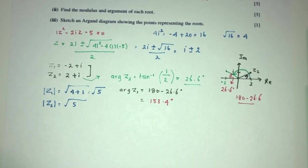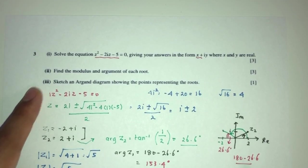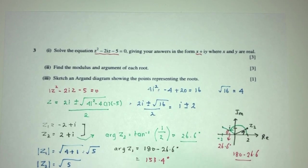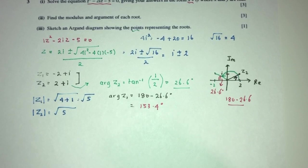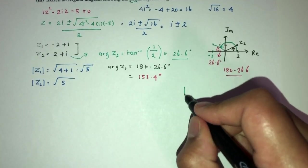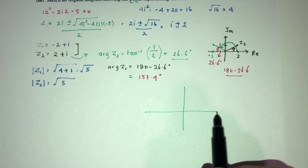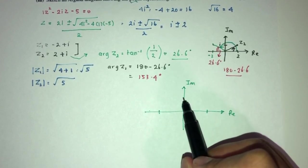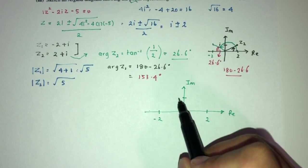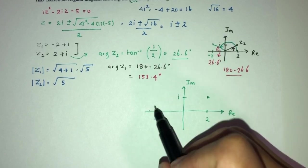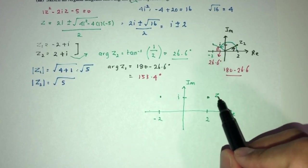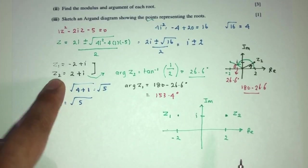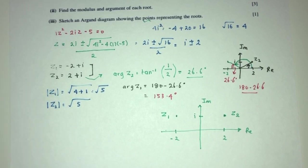For part 3, we sketch the Argand diagram showing the two roots. The real axis and imaginary axis are drawn. z₂ = 2 + i is plotted at coordinates (2, 1) and z₁ = −2 + i is plotted at (−2, 1). Both points are marked with their labels. That completes question number 3.